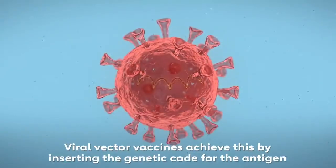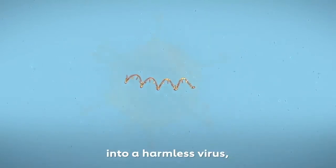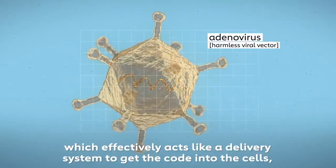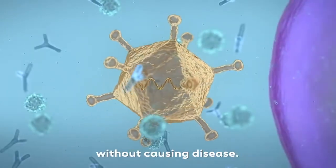Viral vector vaccines achieve this by inserting the genetic code for the antigen into a harmless virus, which effectively acts like a delivery system to get the code into the cells without causing disease.